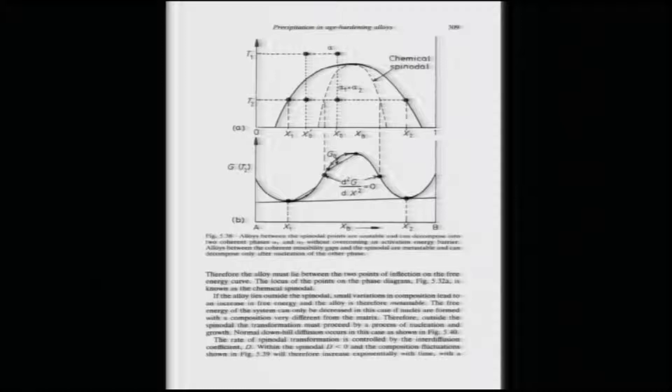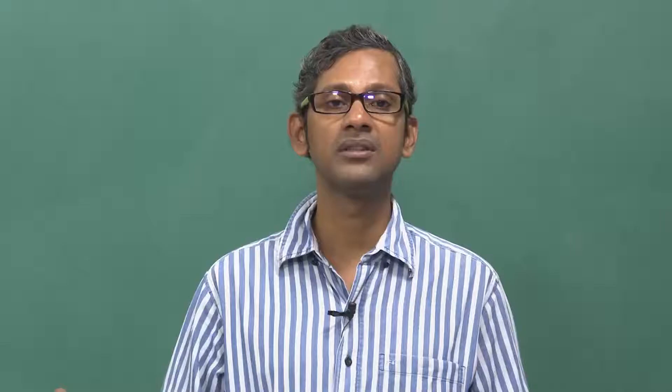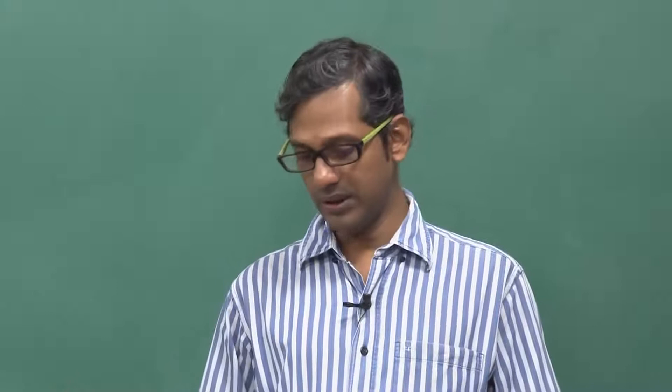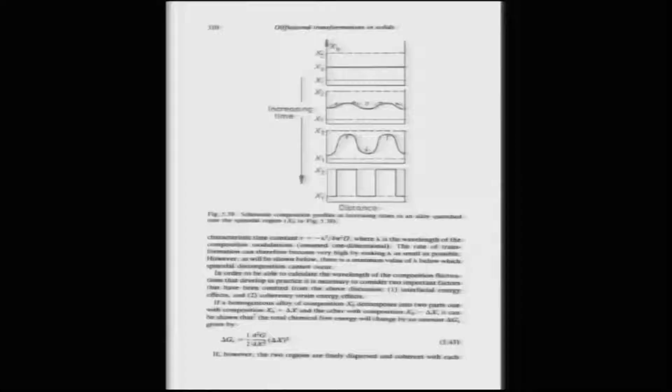Any alloy composition lying in the region between the dotted curve and the solid one — from this point to this point — transformation will happen by nucleation and growth, which is the mode that almost all phase transformations undergo. If you have a composition fluctuation, fluctuations grow and you have phase-separated regions with compositions x₂ and x₁, one being A-rich and the other B-rich, as seen in the phase diagram.